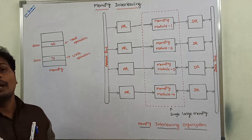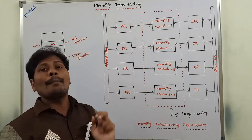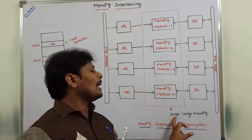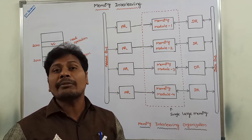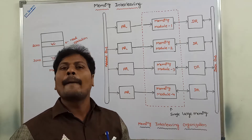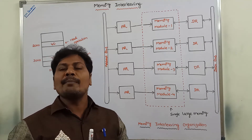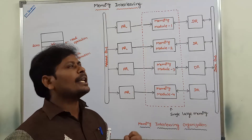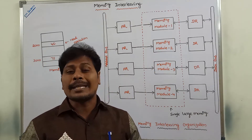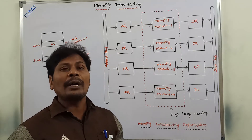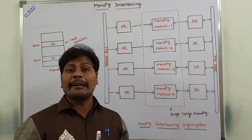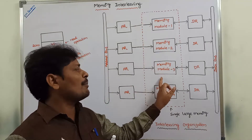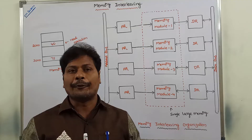The main memory is a single main memory and it accepts only one request — either a read request or a write request. Both requests cannot be accepted at the same time. This is the limitation. To overcome that limitation we are using a concept called memory interleaving. In memory interleaving organization, a single large memory is divided into equal-sized blocks called memory modules. We can make any number of memory modules based on our system requirement.